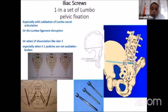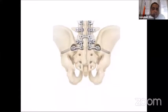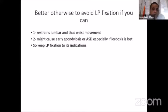Another option is to use iliac screws in the context of lumbopelvic fixation. This is especially important for type 2 and type 3 of the Isler classification. These screws can be placed percutaneously, including the iliac screws, though the connection is not entirely minimally invasive. The problem with lumbopelvic fixation is that it cannot always be used — it is a restraint to lumbar sagittal movement, may cause early adjacent segment degeneration, and maintaining lordosis with these devices is difficult, so we reserve it for its specific indications.